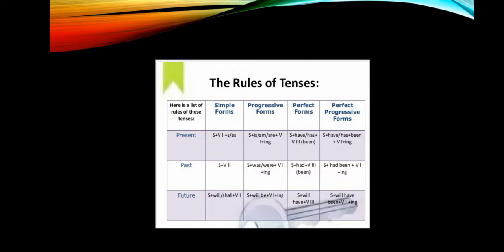For future continuous it is subject plus will or shall plus be plus verb with -ing form. For perfect tenses: present perfect uses have or has plus verb three (past participle). Past perfect uses had plus past participle. Future perfect uses will or shall plus have plus past participle.